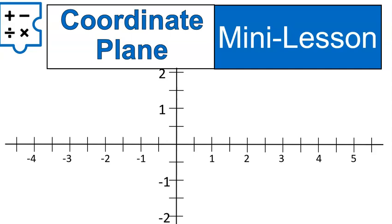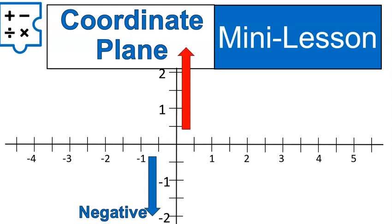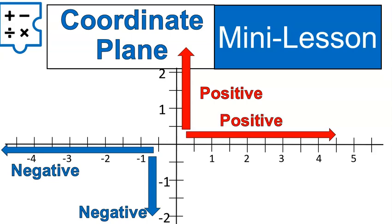Now let's talk about plotting some points. When moving up and down, anything below the x-axis is negative, and anything above the x-axis is positive. This is just like what we talked about with the number line — you start at the origin, anything down is negative, up is positive. Also, moving to the left is negative, and moving to the right is positive. That center location is the origin, just like on a number line.